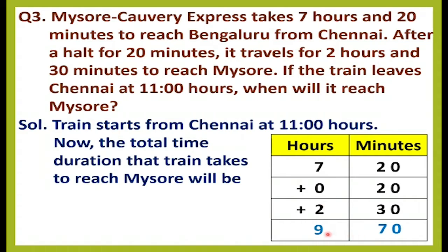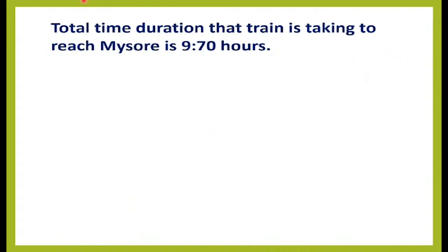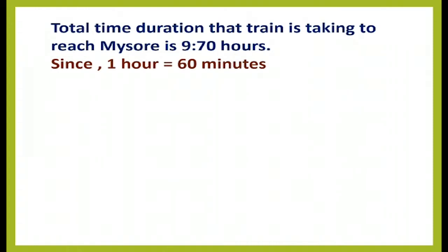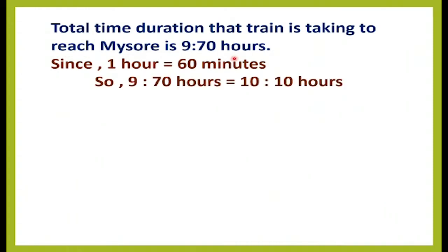The total time duration the train takes to reach Mysore is 9 hours 70 minutes. Since 1 hour equals 60 minutes, we convert: 9 hours 70 minutes equals 10 hours 10 minutes.